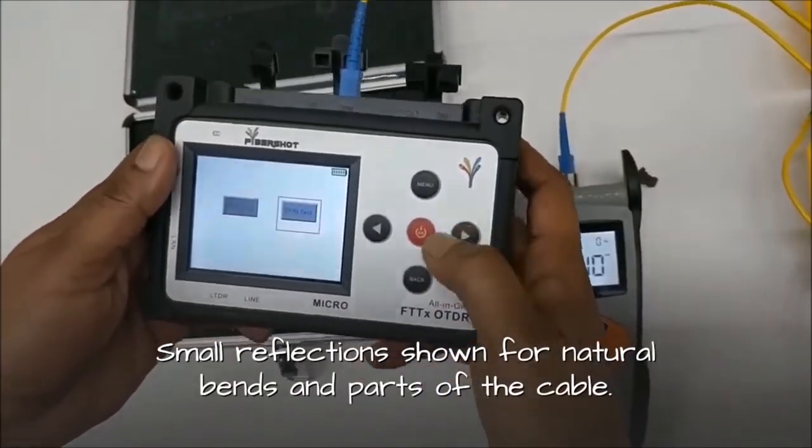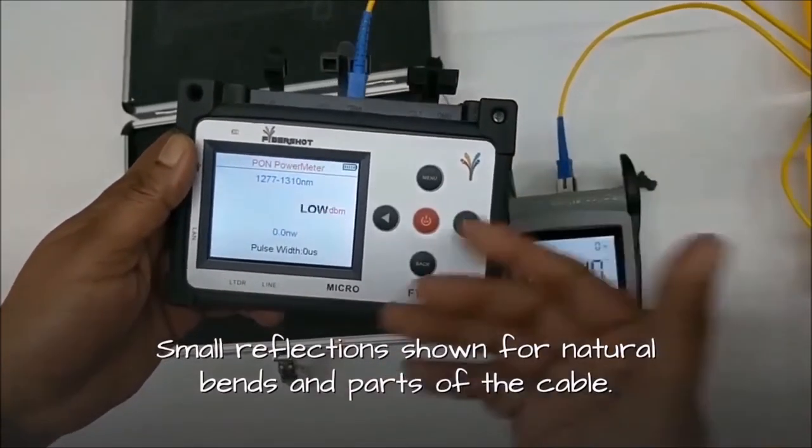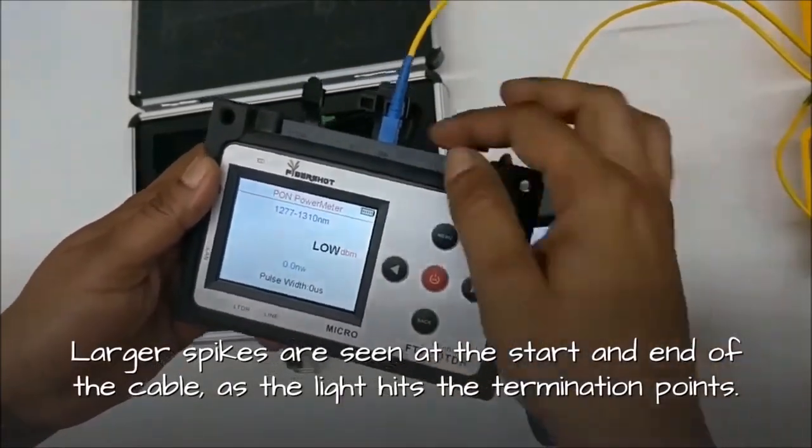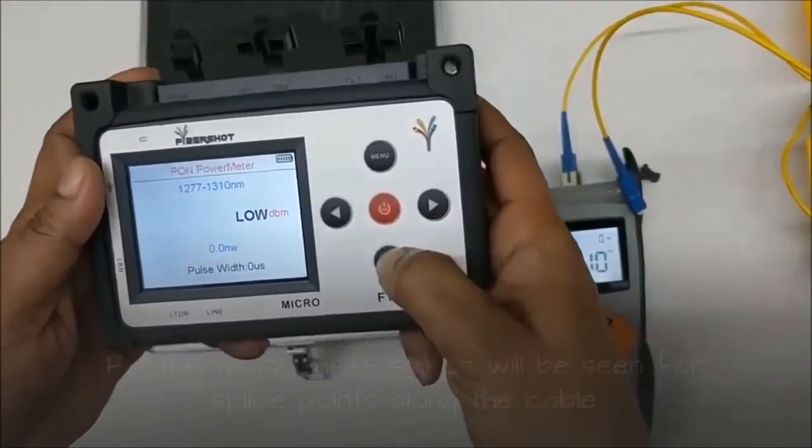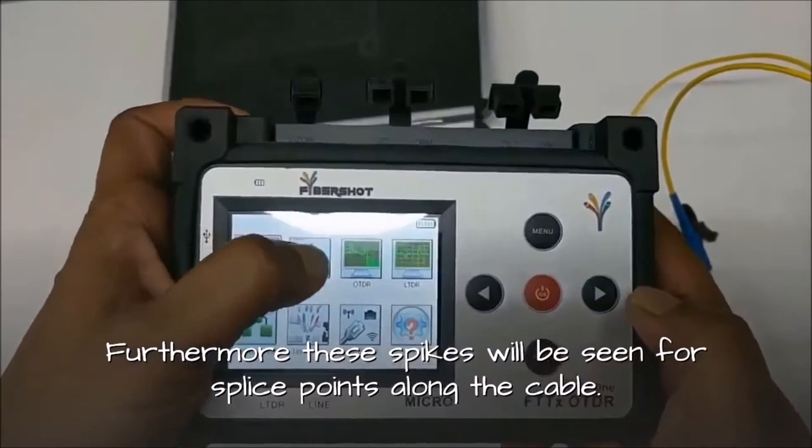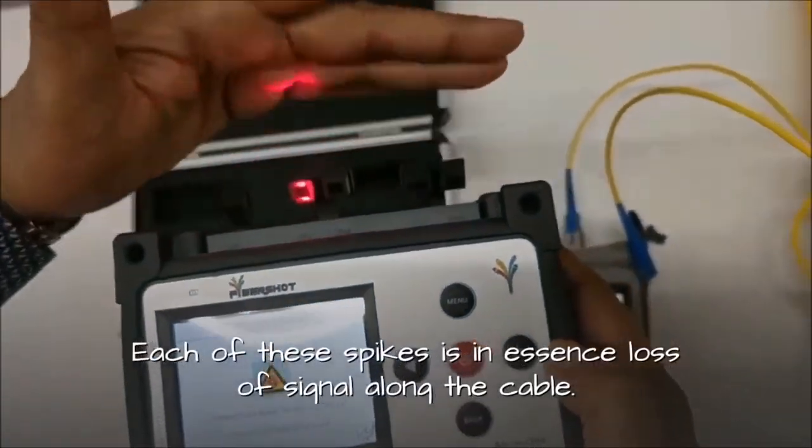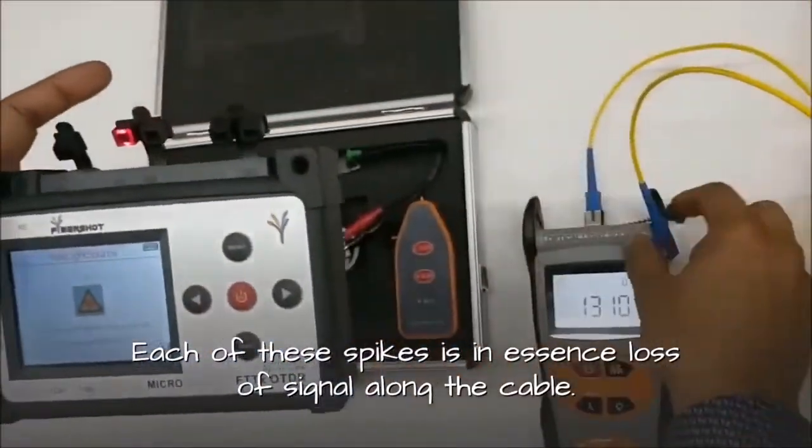Small reflections are shown for natural bends and parts of the cable. Larger spikes are seen at the start and end of the cable as the light hits the termination points. Furthermore, these spikes will be seen for splice points along the cable. Each of these spikes is, in essence, loss of signal along the cable.